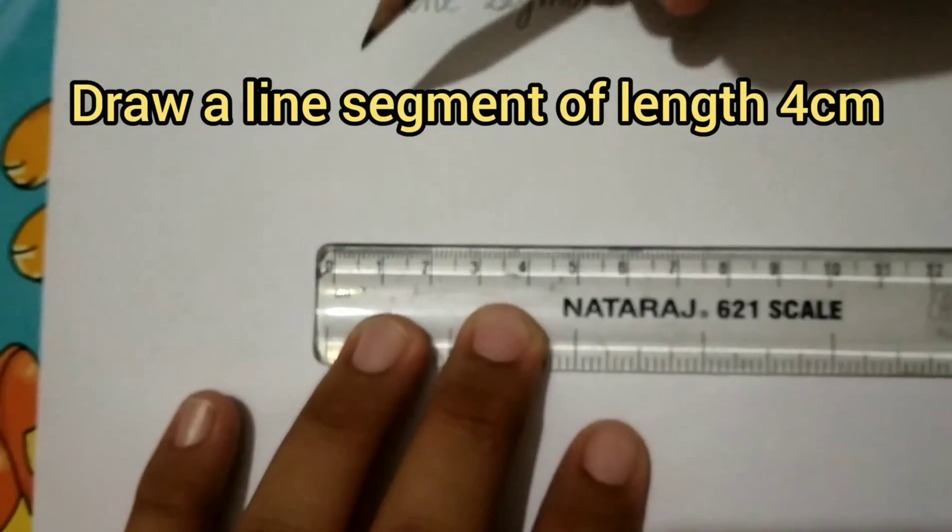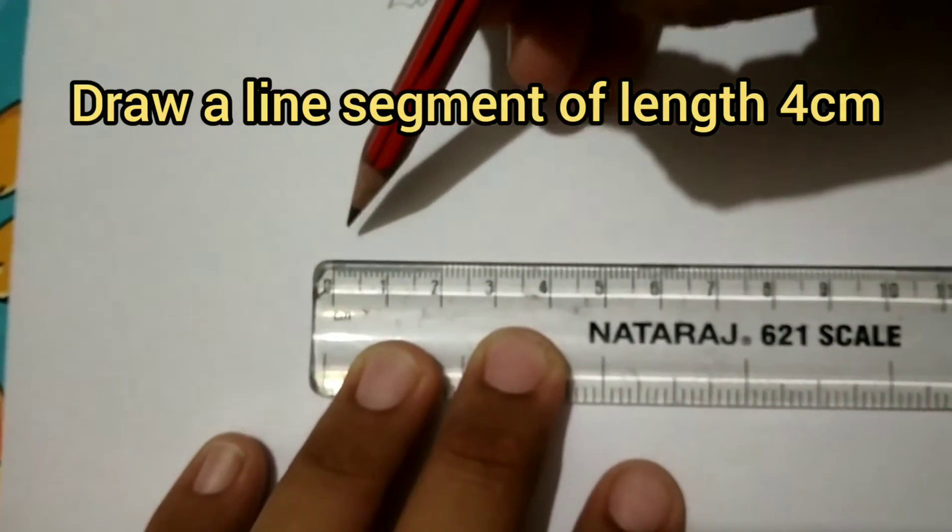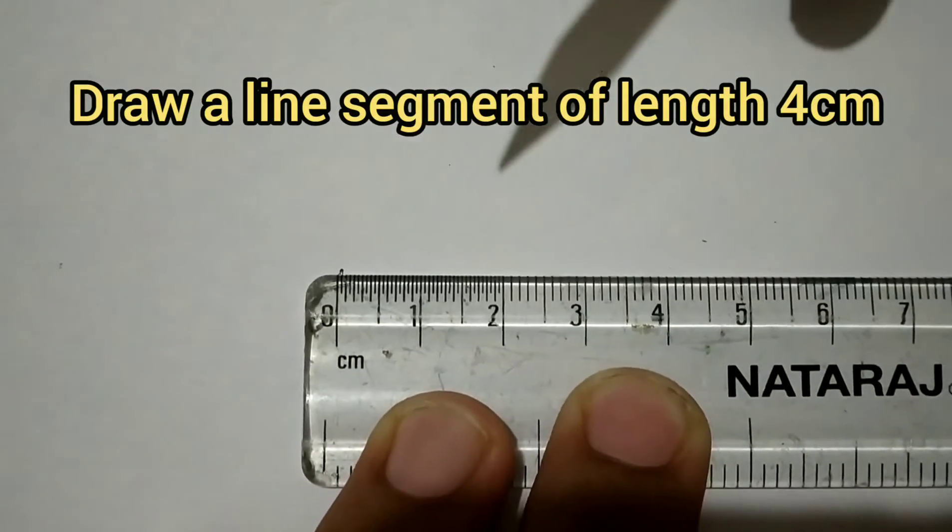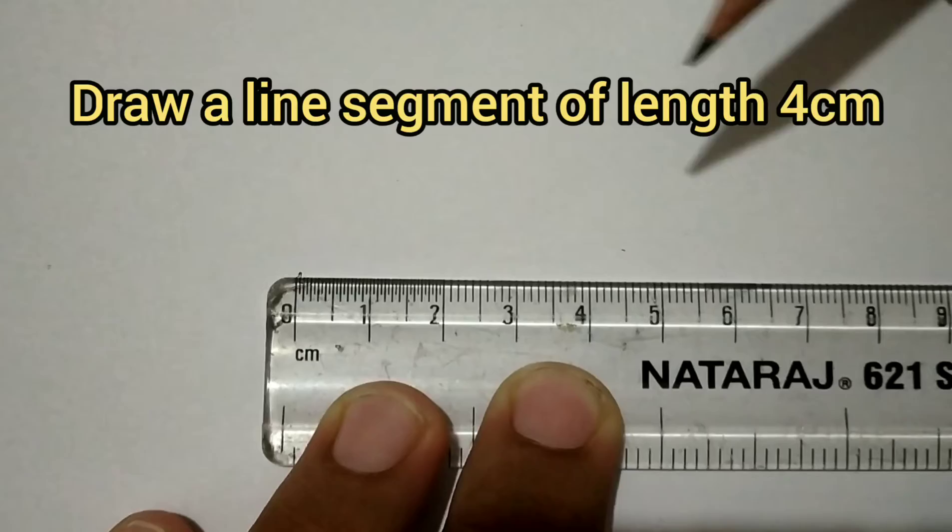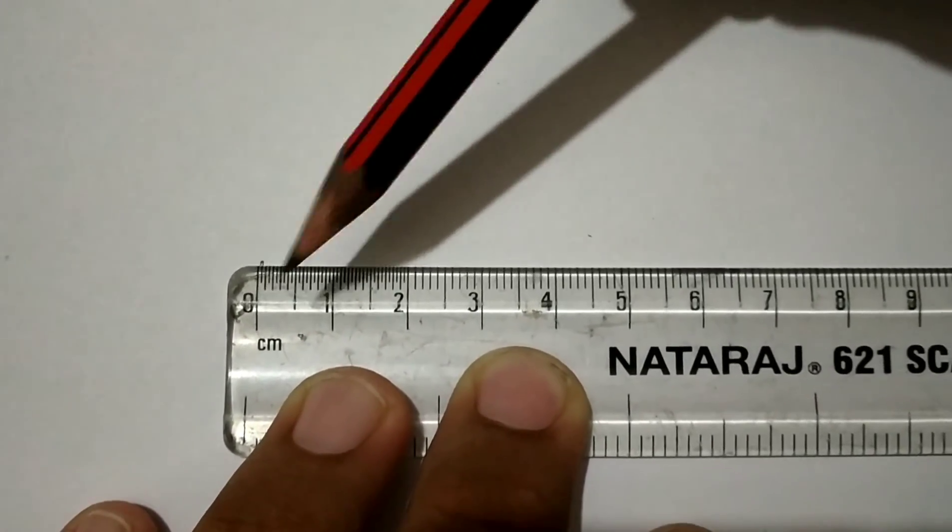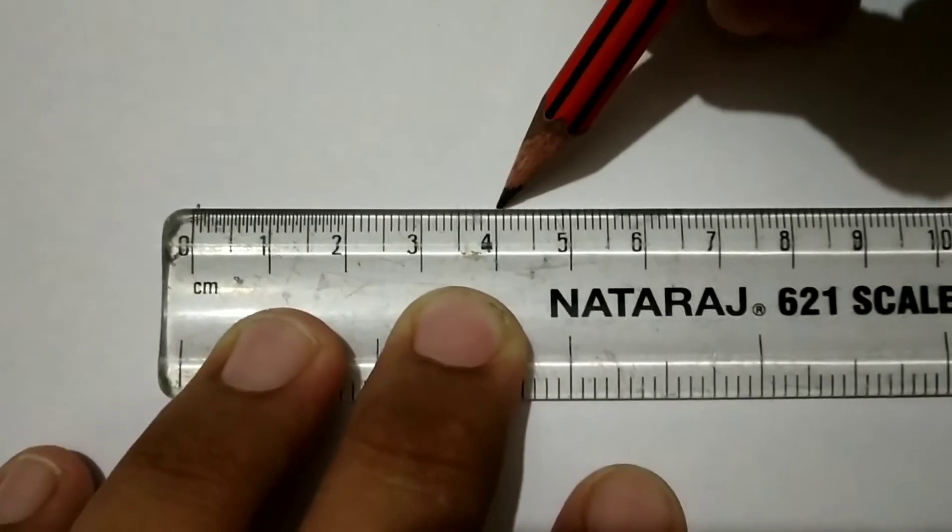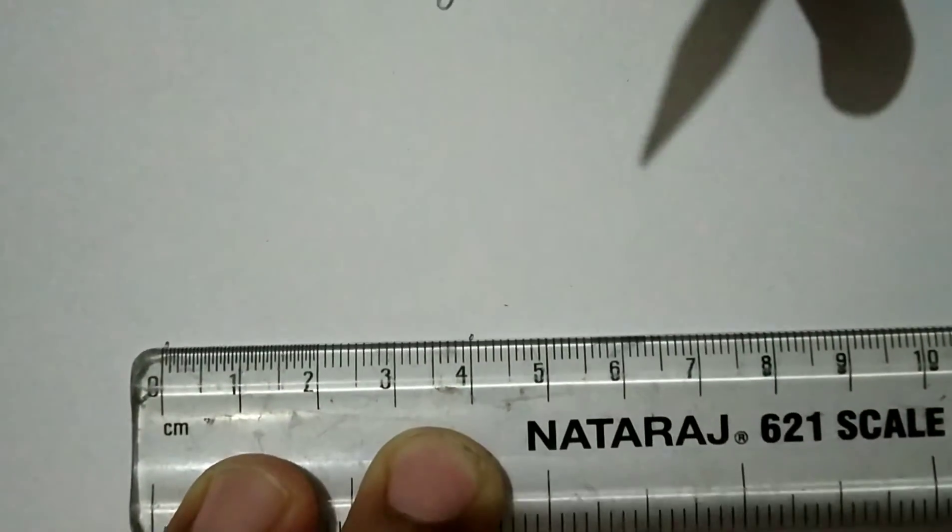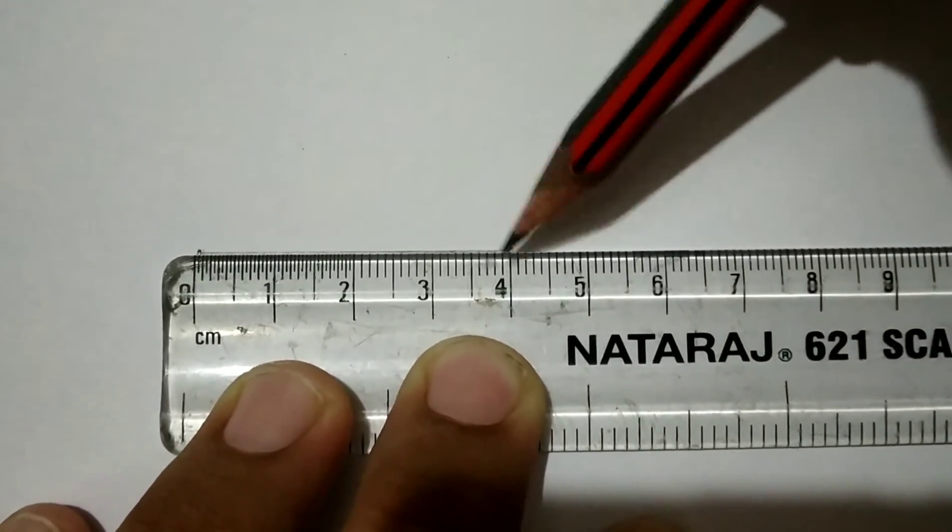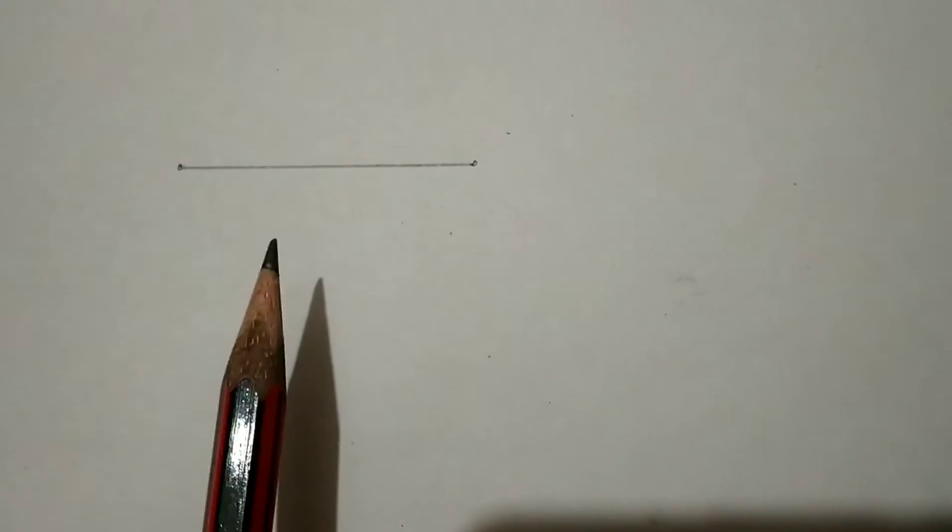We will mark a point at 0, then another point at 4. Then we will join these two points and remove the ruler. In this way, we get a line segment of length 4 centimeters.